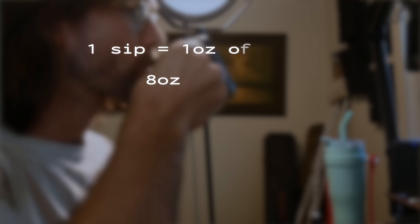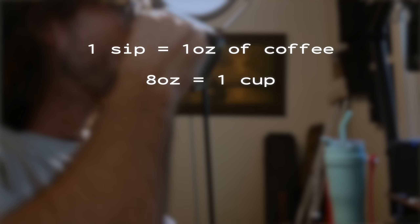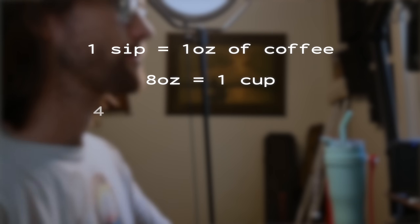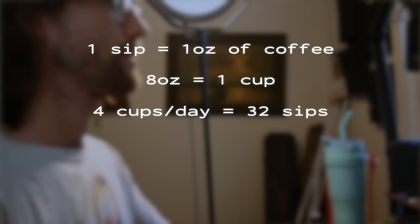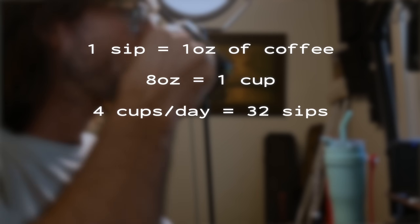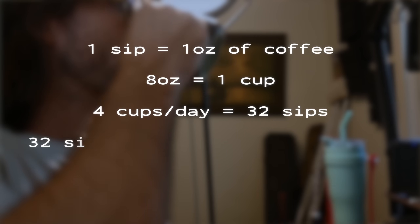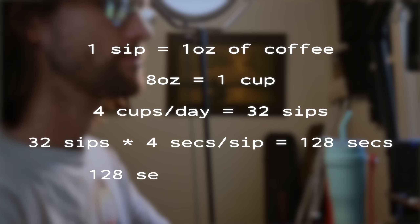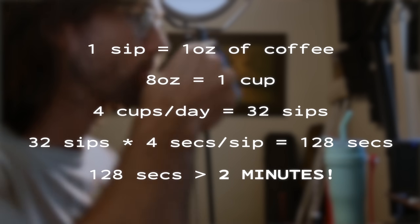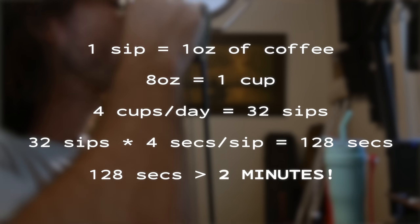A sip is about one ounce of coffee, eight ounces per cup. But we're developers, so multiply that by at least four cups, and that equates to 32 sips. Multiply that by four seconds per sip, and you're looking at over two minutes of wasted time. I've come up with a contraption to get that time back.